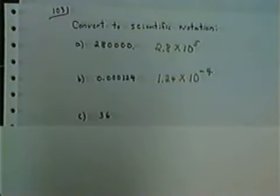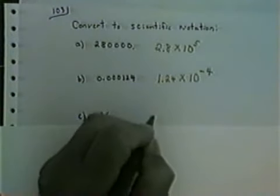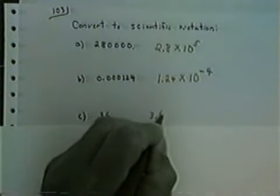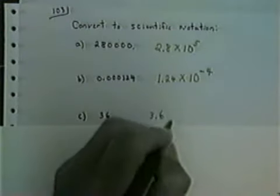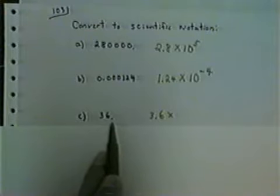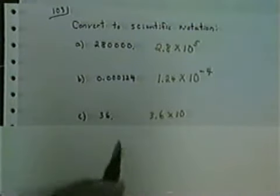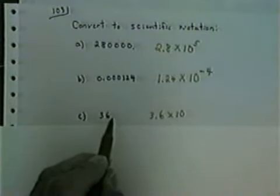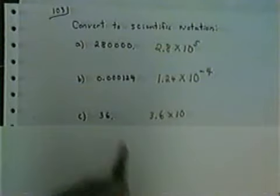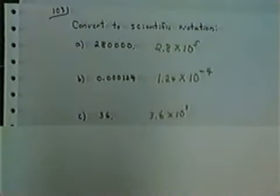Now consider 36. The decimal is understood to be at the end. I need to have 3.6, so it would be 3.6 times 10. Since 36 is a large number — its absolute value is more than 1 — it would be 3.6 times 10. I had to move my decimal one place to get it from behind the 6 to between the 3 and the 6, so the exponent is positive 1.